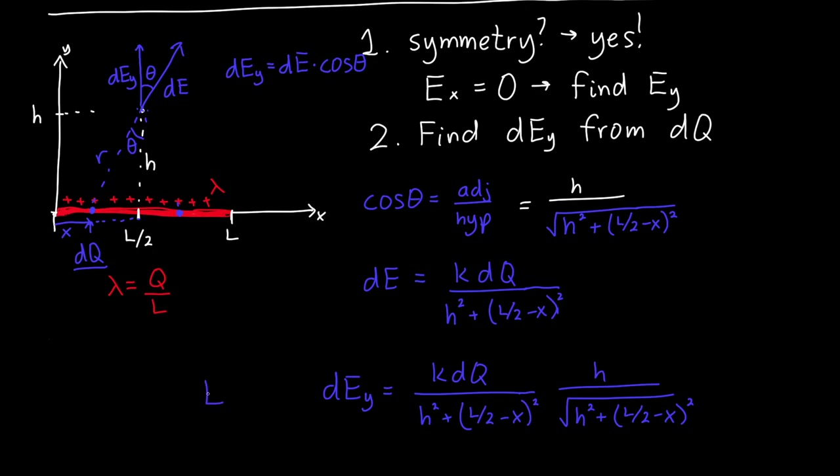And now to find EY, all we need to do is integrate. So add up all of the little DEYs. So we now integrate this side. And we're starting our integration where our line charge starts, which is at 0, and we're ending it where our line charge ends, which is at L. So our bounds of integration are 0 to L.